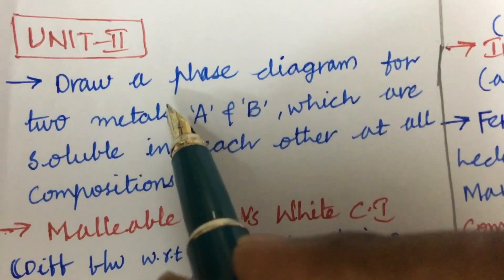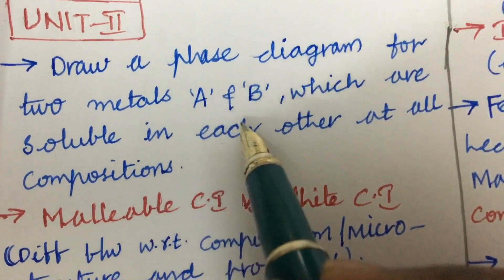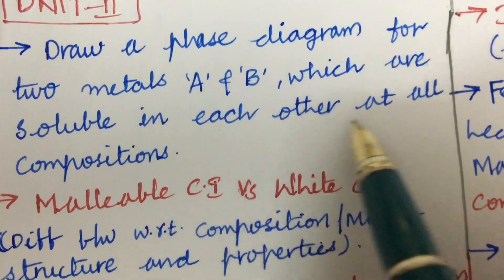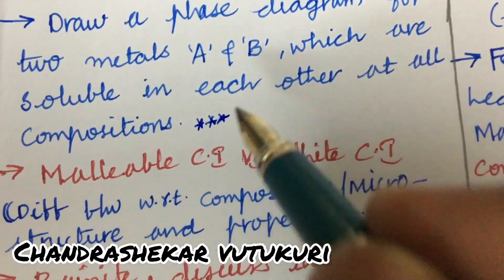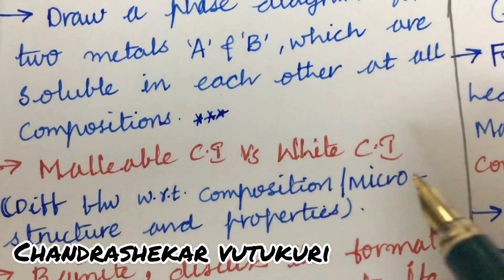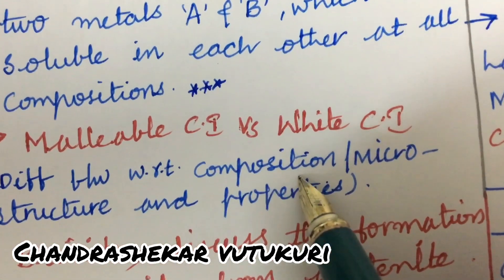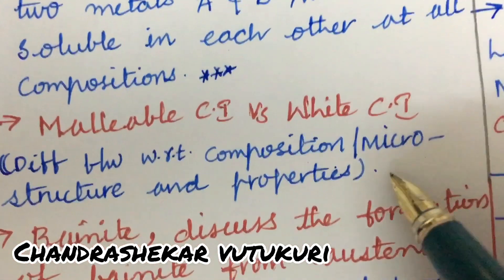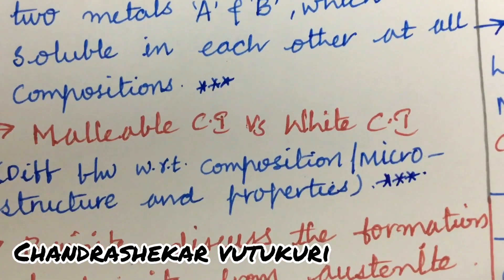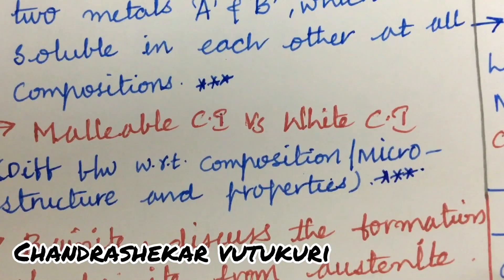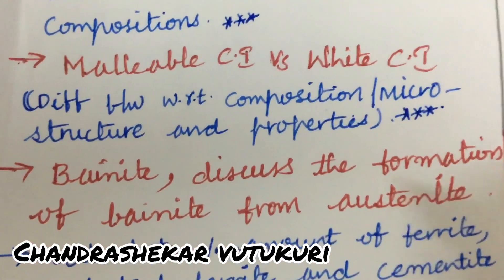The second unit also consists of two questions in your question paper. Drawing a phase diagram for two metals A and B which are completely soluble in each other at all compositions is said to be a very important gunshot question. Malleable cast iron versus white cast iron, with differences in composition, microstructure, and properties, is also important. For each and every material in this subject, you are supposed to work out all the properties as well as compositions of various materials.